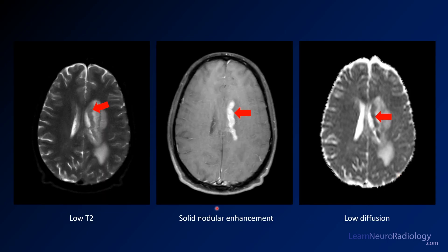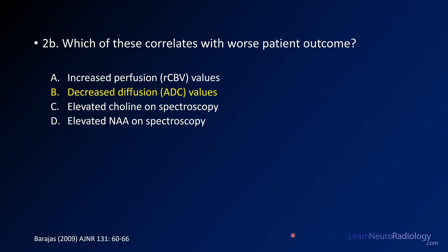Here are the same images we were looking at before. On T2 it's relatively dark. On post-contrast you see nodular enhancement along the margins of the ventricle, and on ADC it has low diffusion — see how dark it is. The answer to the second question is decreased diffusion values. It's been shown that the lower the diffusion value, the worse the survival, so that correlates with poor outcome.